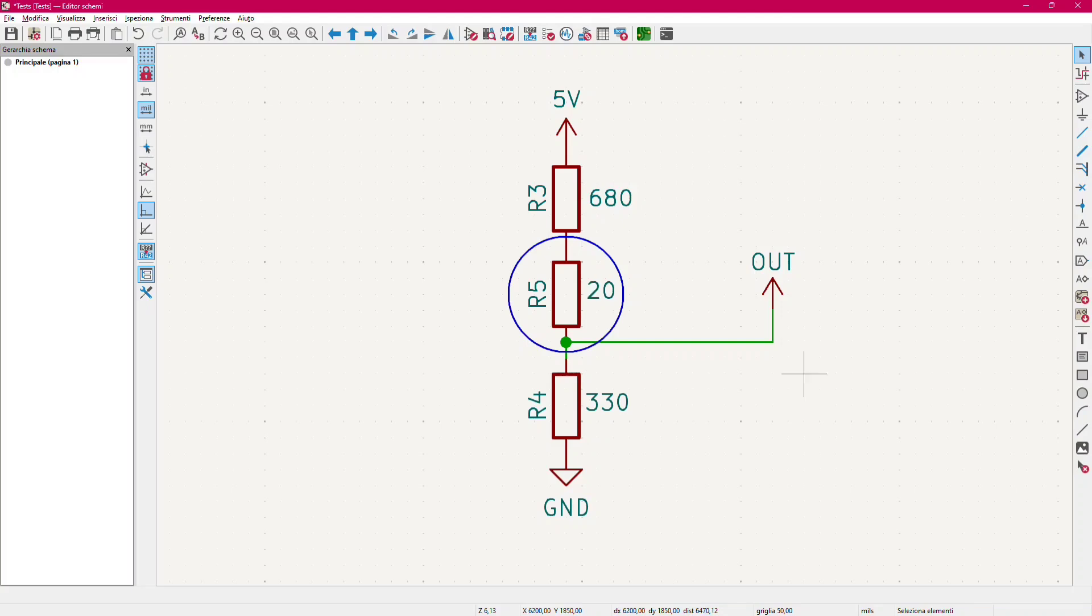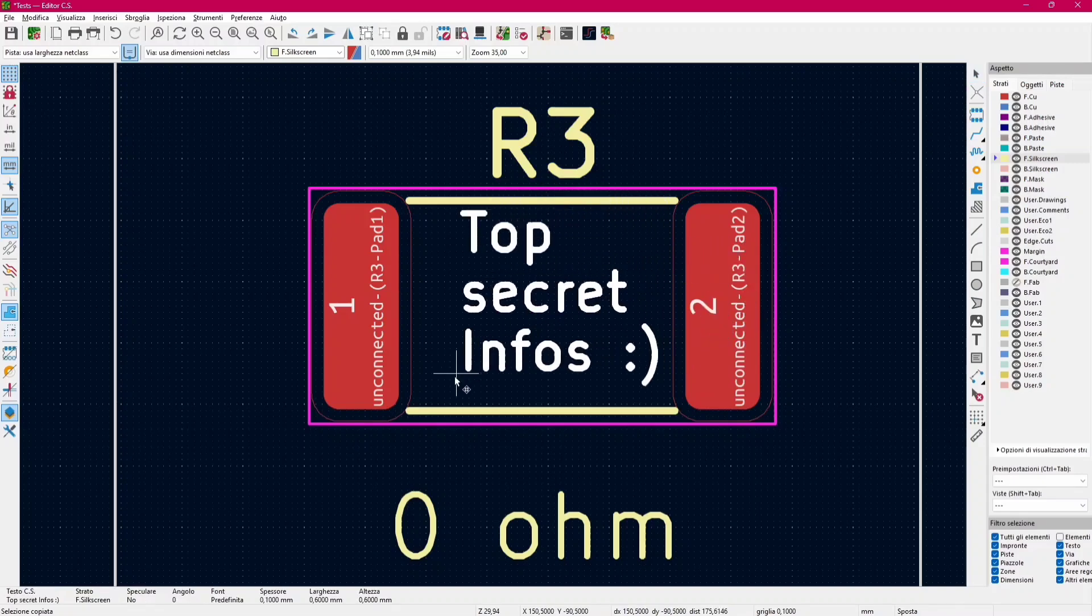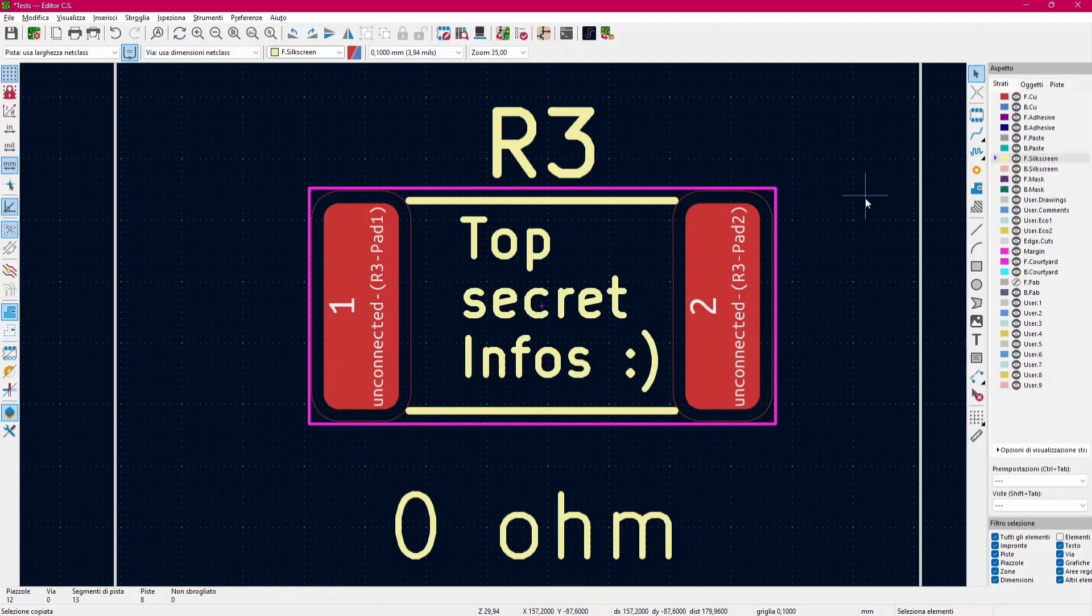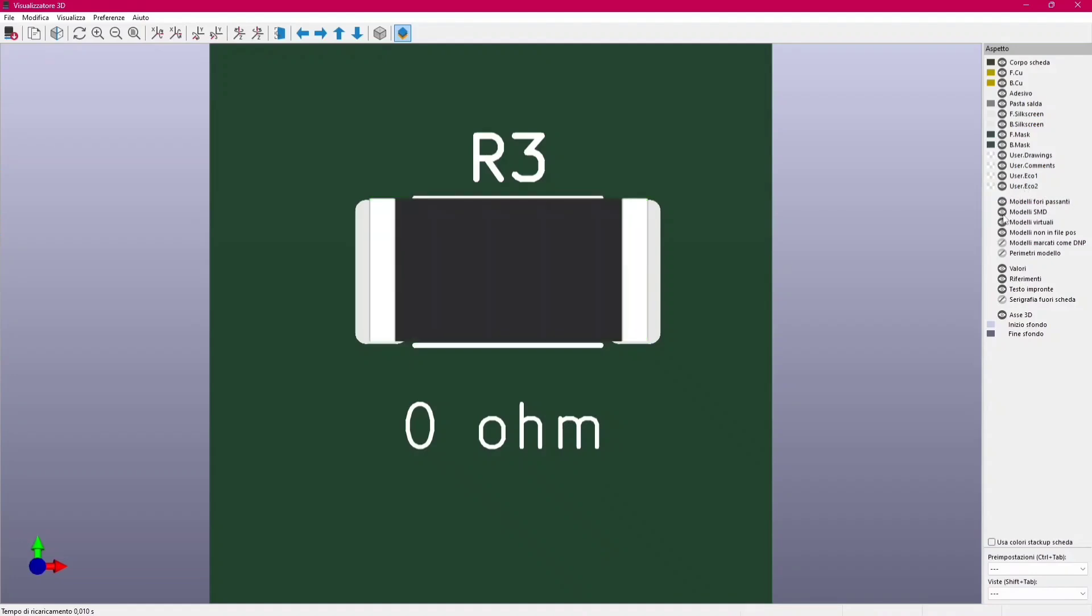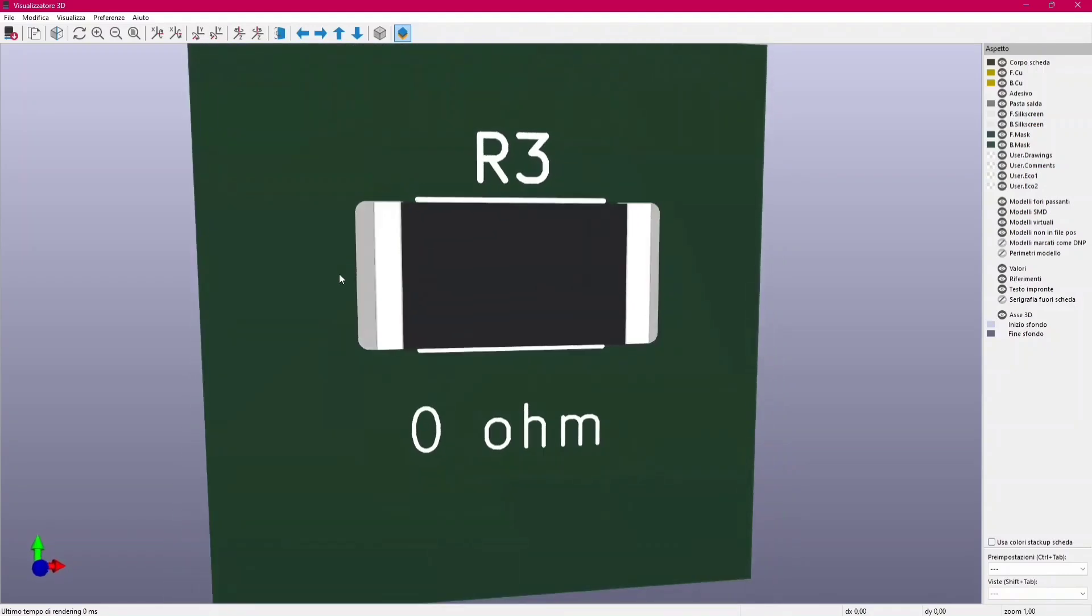The fourth use of a zero ohm resistor is, well, basically to hide information under it, or to make the reverse engineering more difficult. Although, for this purpose, there are much better ways. Like, laser etching IC markings that is very common, and there are also blank ICs that really do nothing, but they are here just to confuse the guy who wants to reverse engineer.